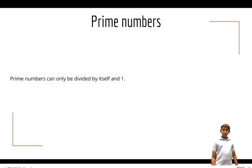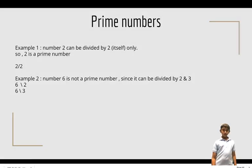Here are some notes to make before we start. Prime numbers can only be divided by themselves and one. Here are some examples. Example 1: Number 2 can be divided by 2 itself or 1 only, so 2 is a prime number. Example 2: Number 6 is not a prime number since it can be divided by 2 and 3.